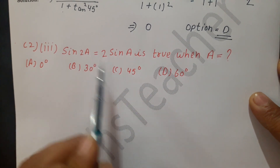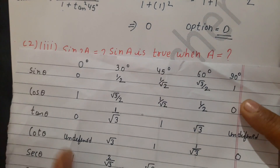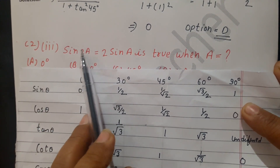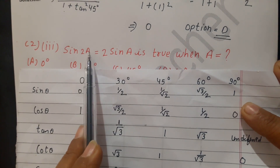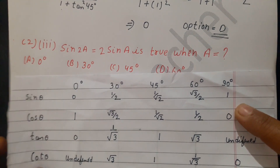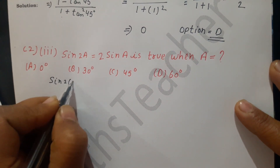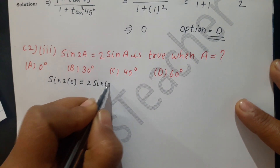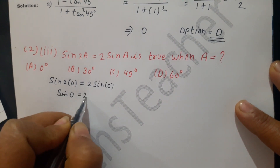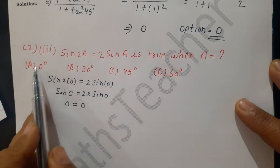Now let's put A = 0°. So sin(2×0) = sin0 = 0, and 2×sin0 = 2×0 = 0. Left equals right, so the answer is A = 0°. Confirming: sin(2×0) = 2sin0, which gives 0 = 0. Left and right are equal, so the answer is 0 degrees.